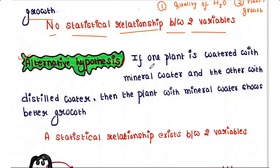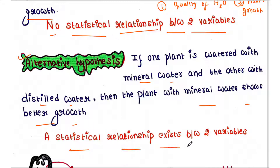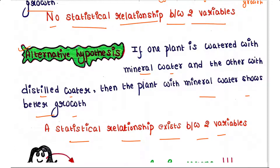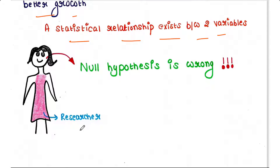The alternative hypothesis of the above experiment is: if one plant is watered with mineral water and the other with distilled water, then the plant with mineral water shows better growth. That means a statistical relationship exists between the two variables — quality of water and plant's growth.